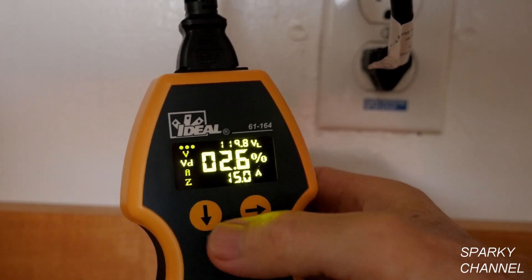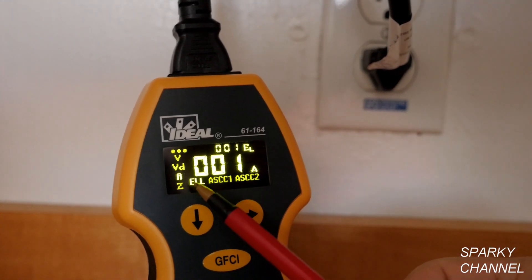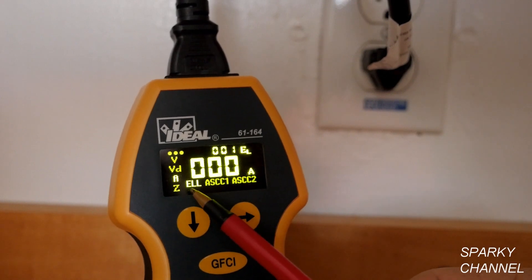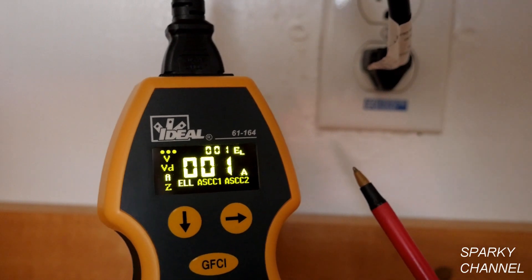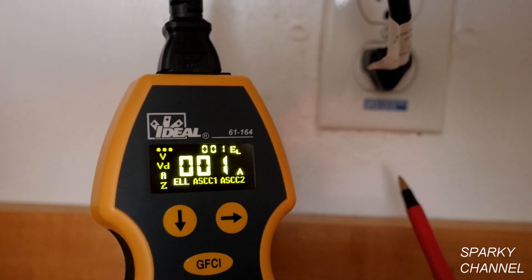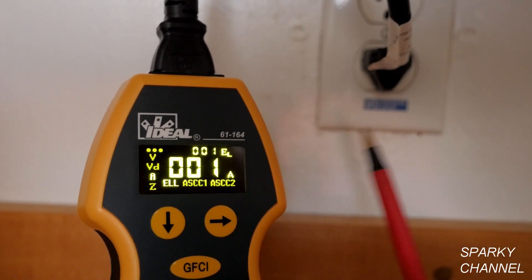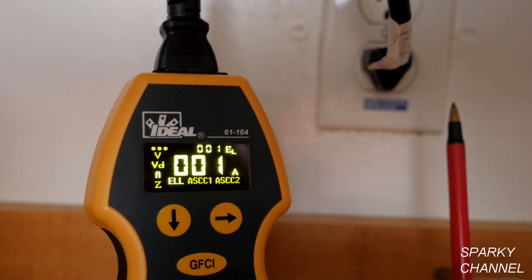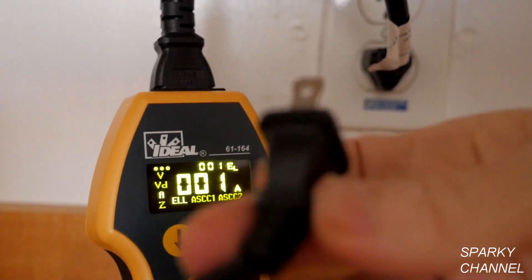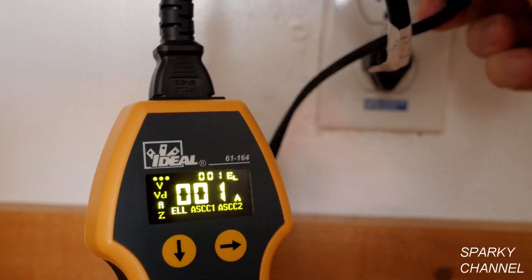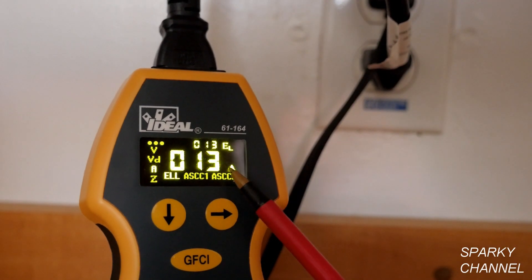Now we'll press the downward arrow another time, and this brings us to amperage. We have ELL, that means Estimated Load Online. This is a very handy feature. It tells you how many amps are currently in the circuit, and right now we're using one amp. There's probably something plugged in on another receptacle that's using a little bit of current draw. Now I have a toaster oven that I will plug into this receptacle as well.